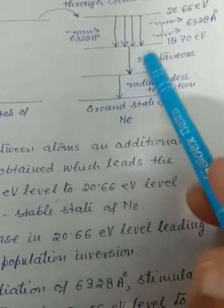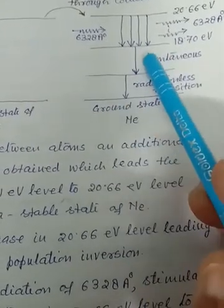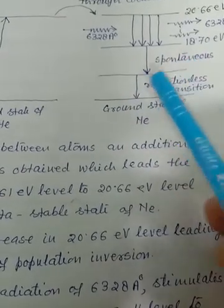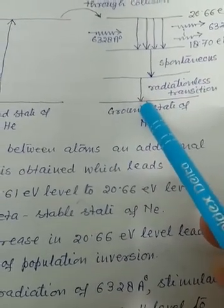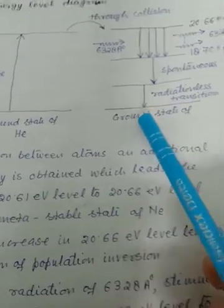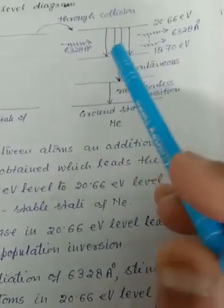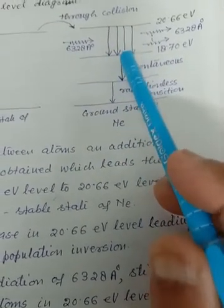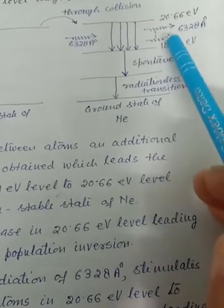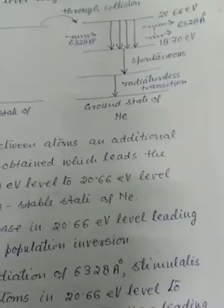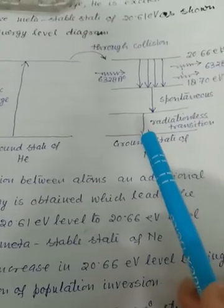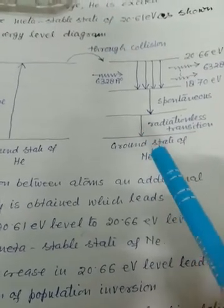The spontaneous emission cannot exit the discharge tube — one end is perfectly silvered and one end is partially silvered. The remaining transition to the ground state is a radiationless transition, where the energy is spent increasing the nuclear vibrations of neon — similar to what was explained for the Ruby laser. Starting from the ground state and returning to the ground state, the process is complete. In this process we obtain a laser beam of 6328 angstroms from the helium-neon laser. Thank you very much.